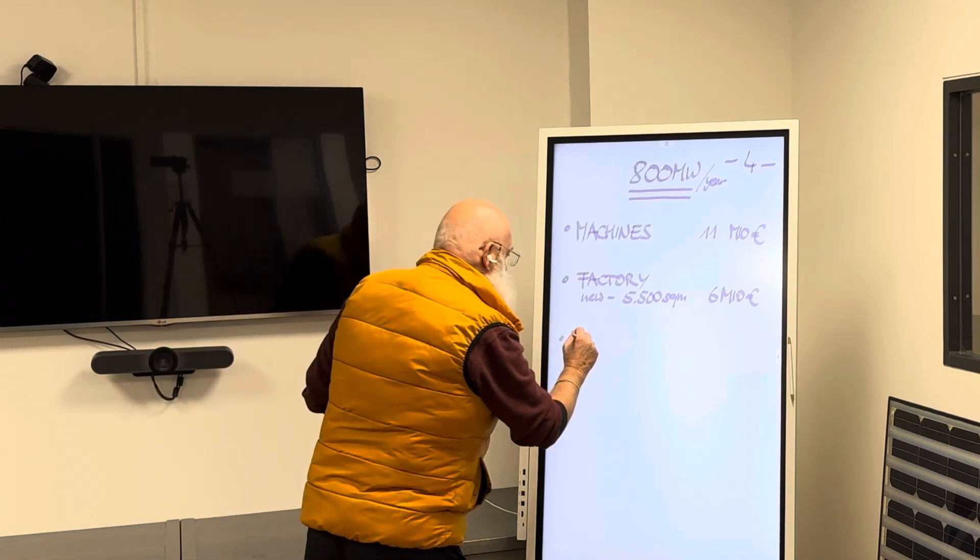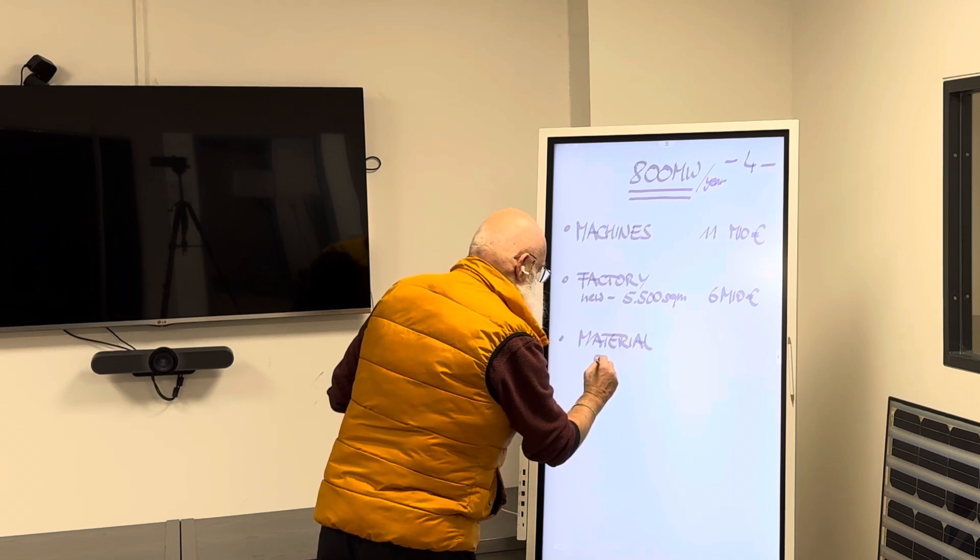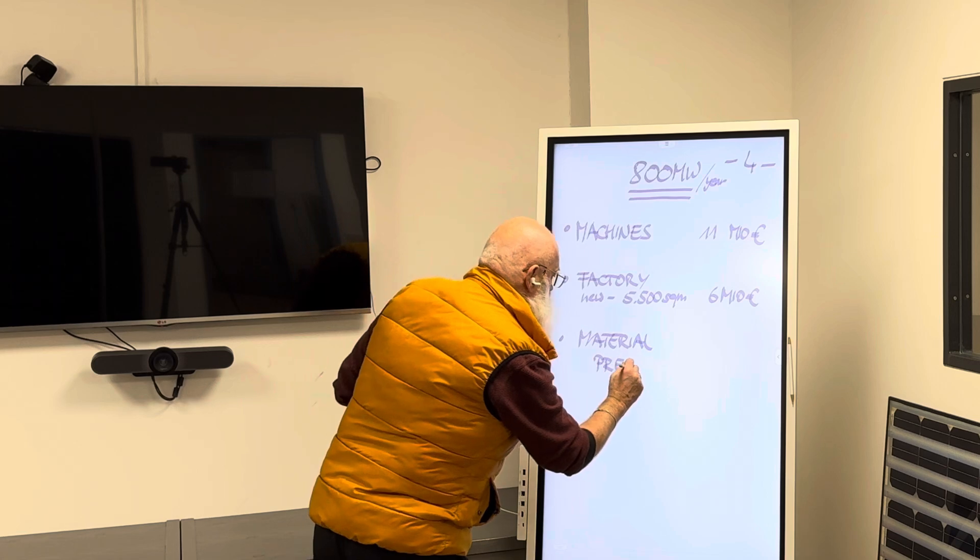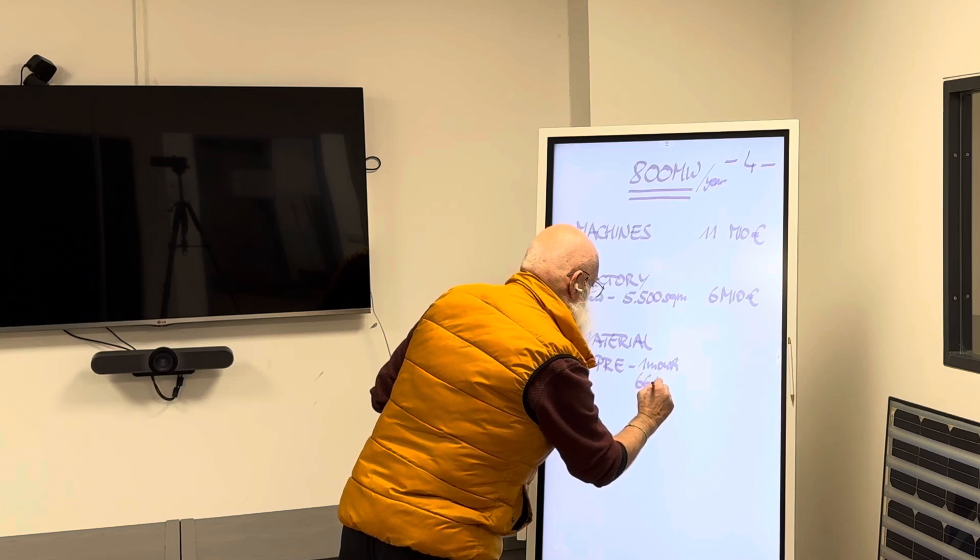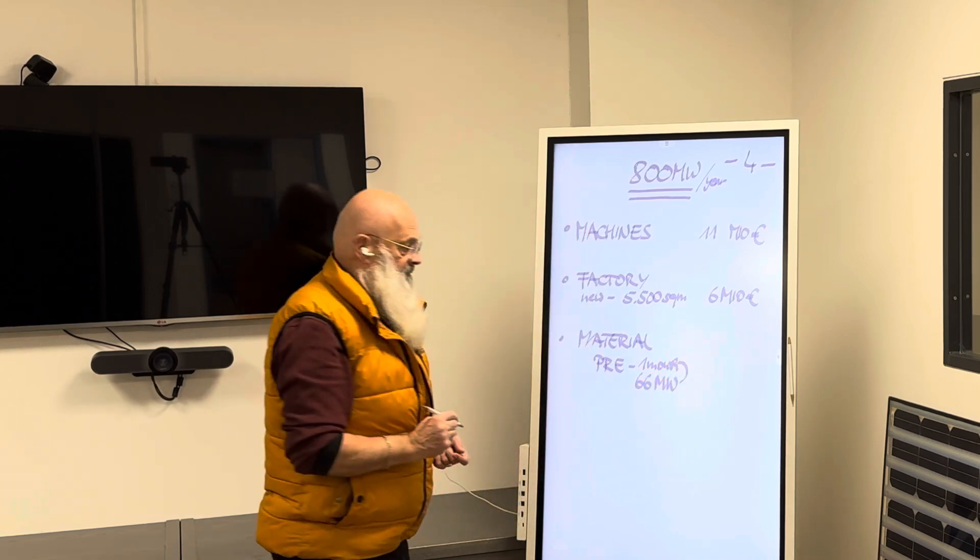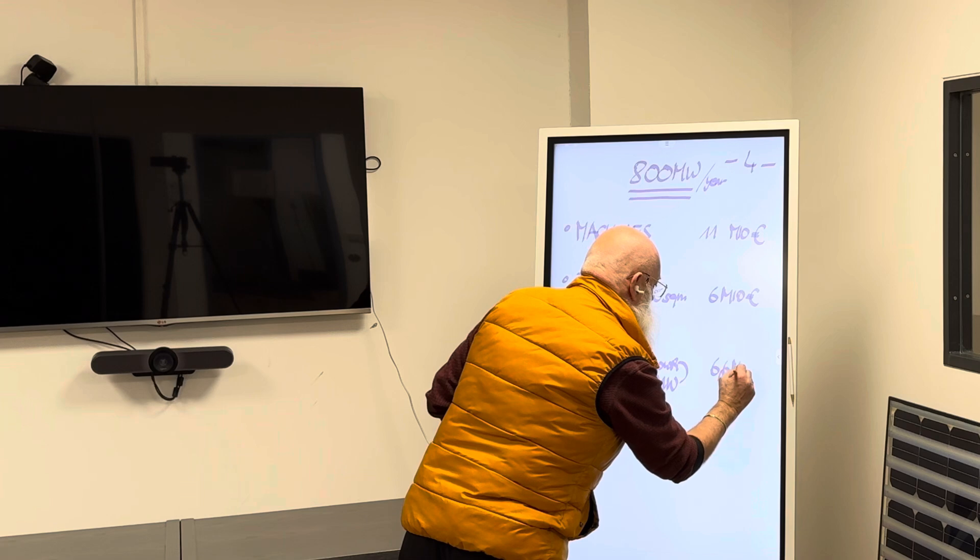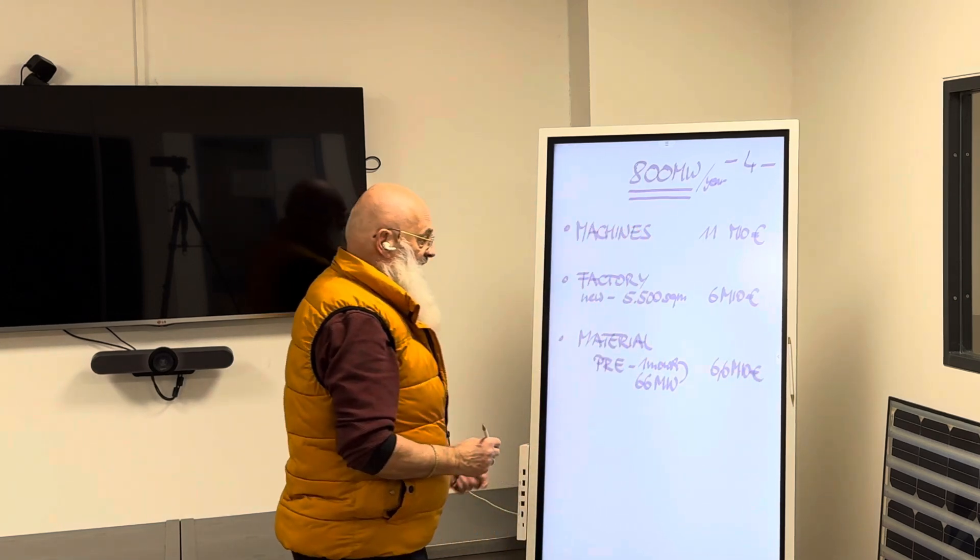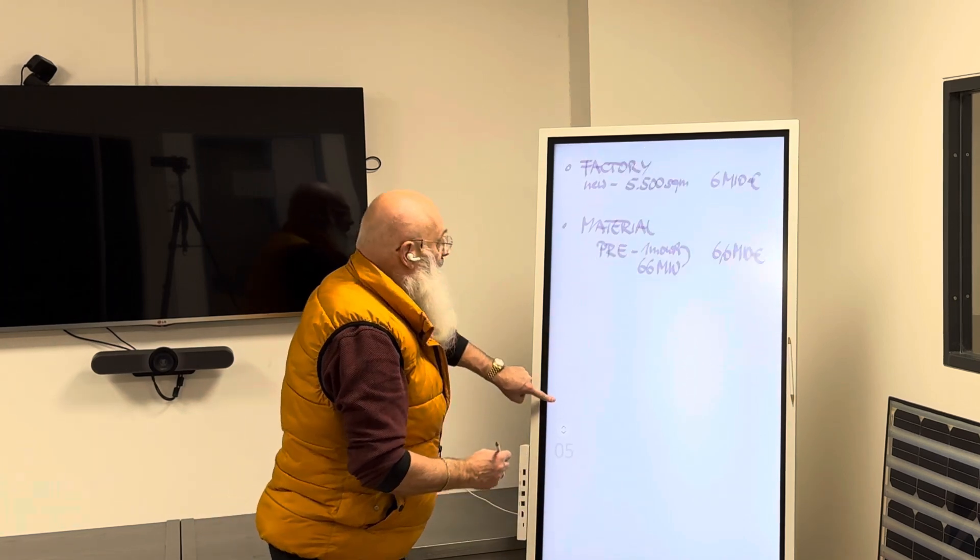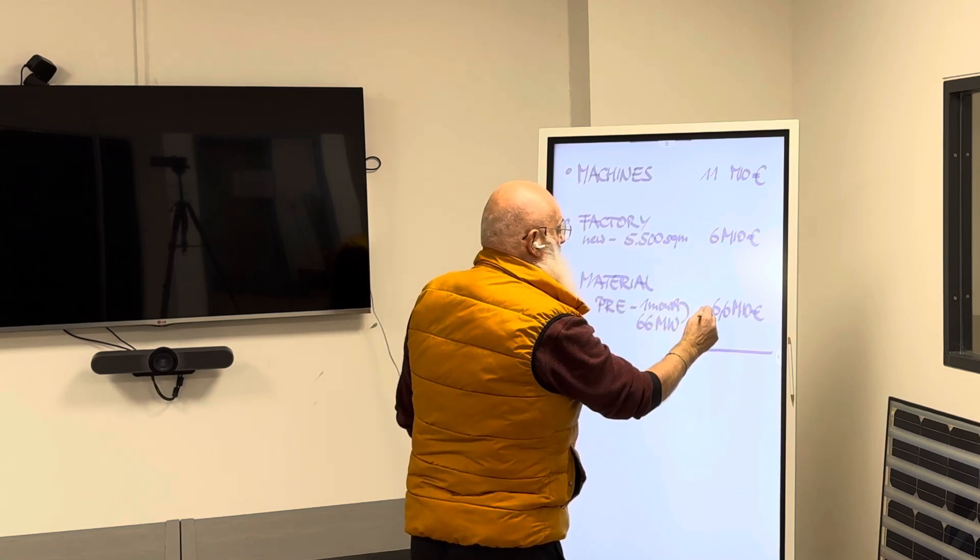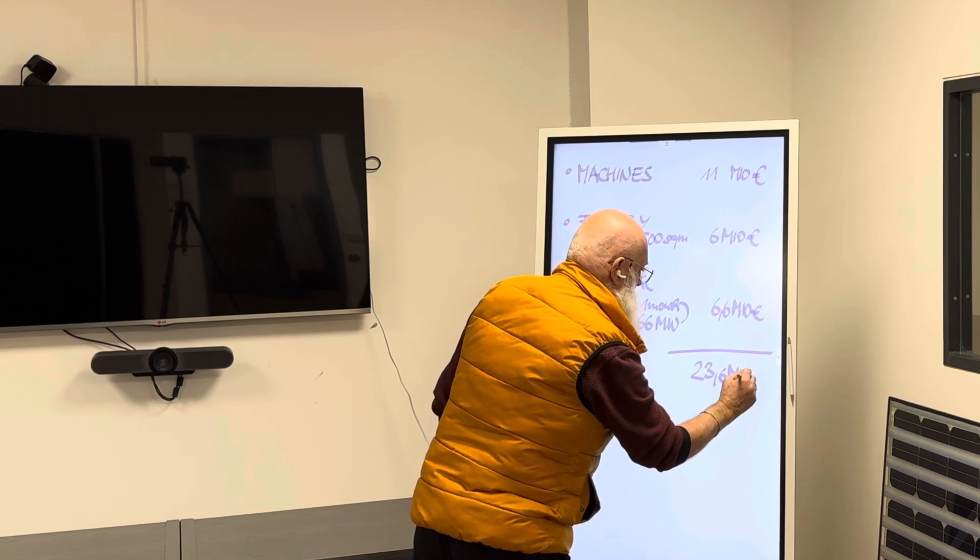The material you have to pre-finance for one month is roughly 66 megawatt, which means your investment is 6.6 million euro for materials. The total as we did before is 17 million plus 6.6, which is 23.6 million euro.